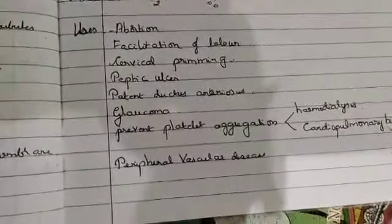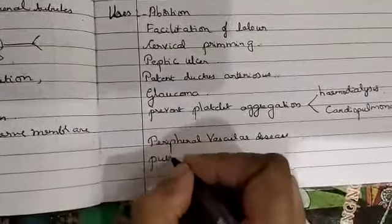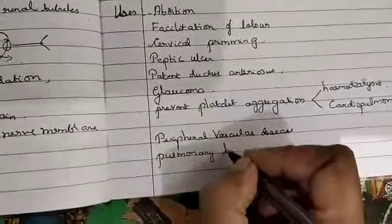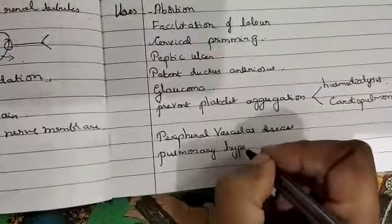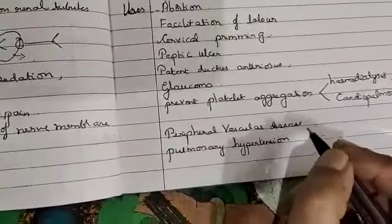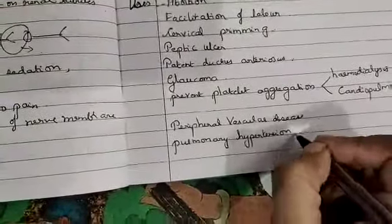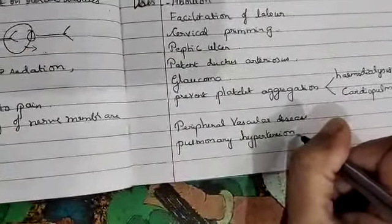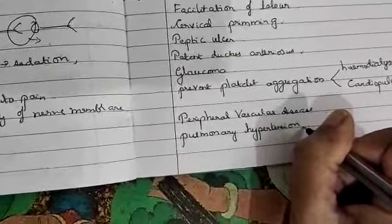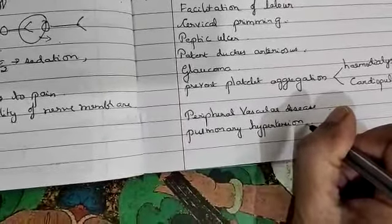The next type of use of prostaglandins is it is used in pulmonary hypertension. When you give in pulmonary hypertension, hypertension occurs due to increase in peripheral vascular resistance. When you give this drug it tends to decrease the peripheral vascular resistance.